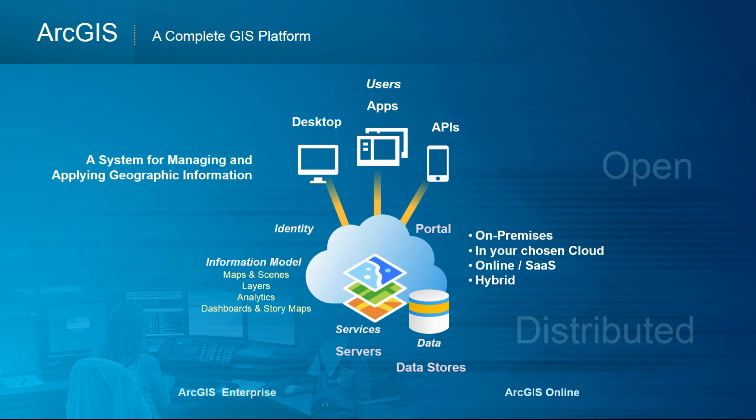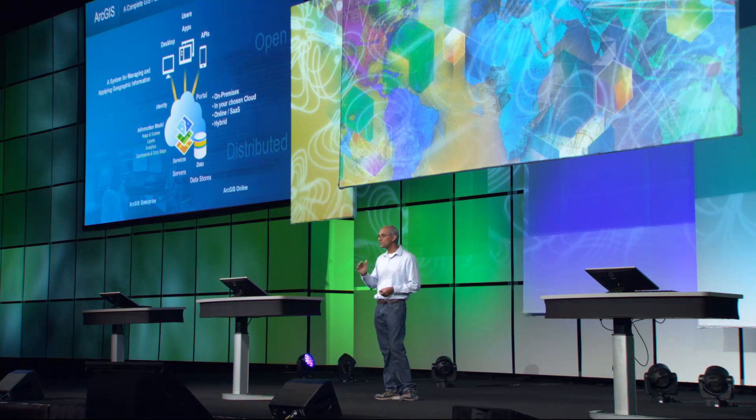If we drill into the ArcGIS platform, this is its essence. Its users are working with information using applications that connect to the platform. The platform provides an identity and information model made up of maps and scenes, layers, analytics, dashboards, story maps, as well as other information products. All of this is powered by services, and those services expose and work with data.